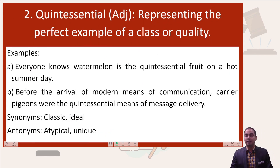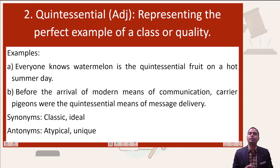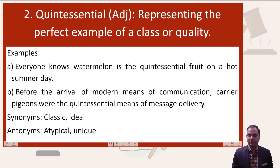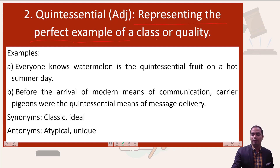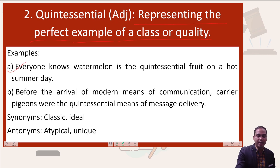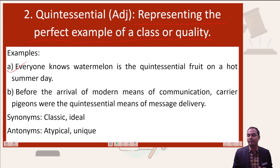The next word in the list is quintessential. This is an adjective and can also be used as a noun. If I say something which is quintessential, it means that it represents the perfect example of a class or quality. For example, everyone knows watermelon is the quintessential fruit on a summer day.